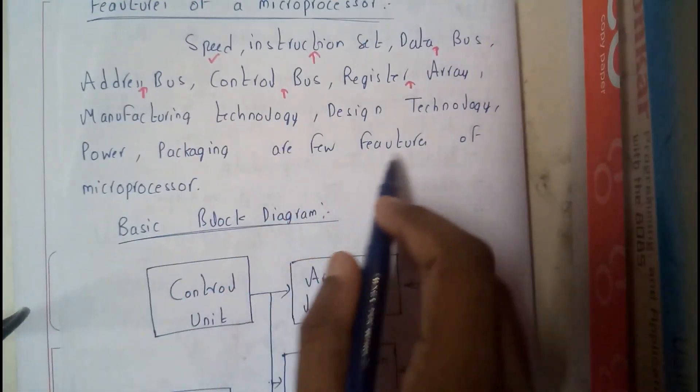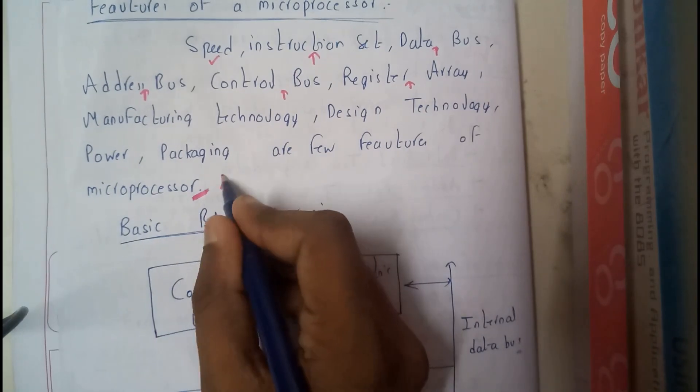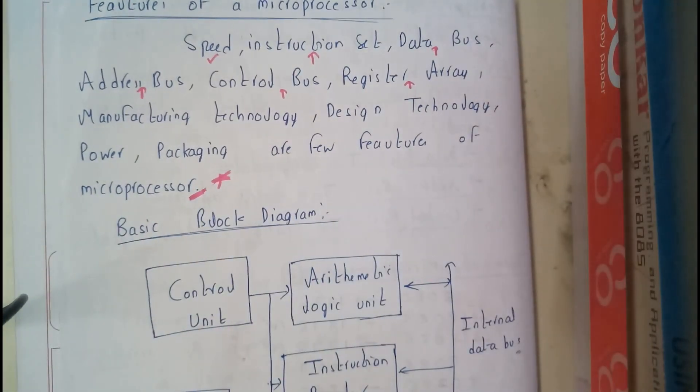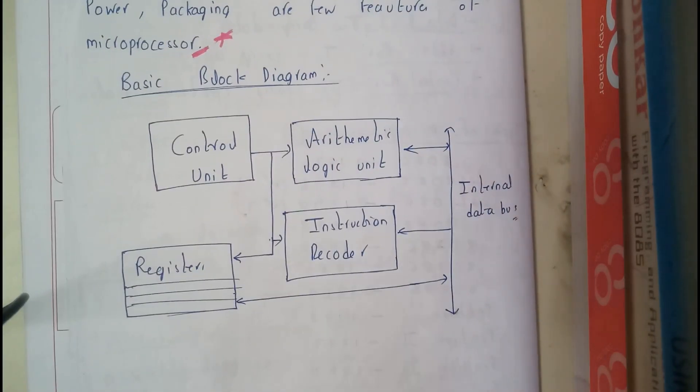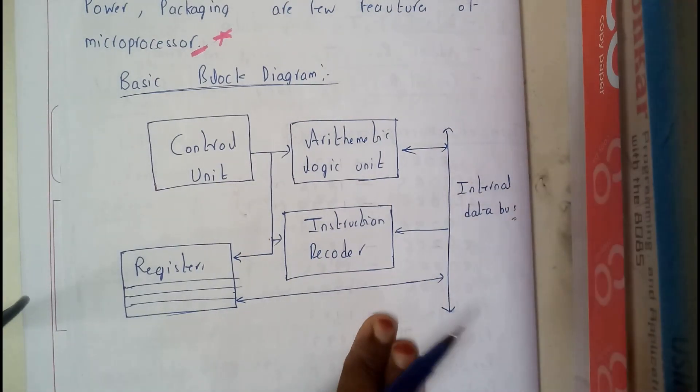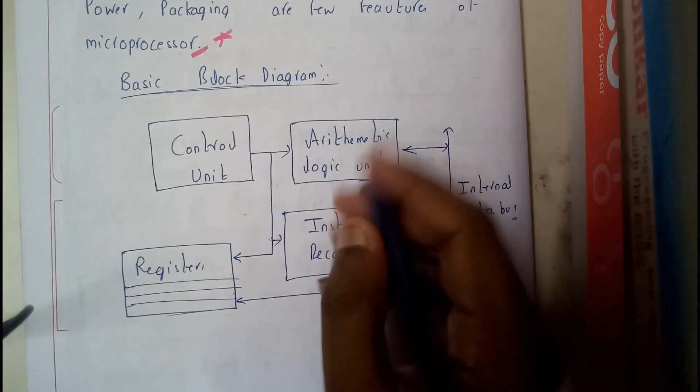These are the key features that you should check before you create a microprocessor or you start using a microprocessor. So the basic block diagram of a microprocessor is this.